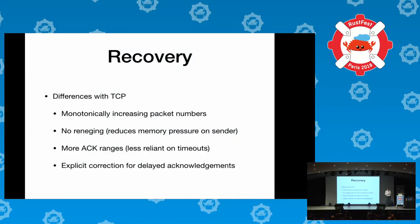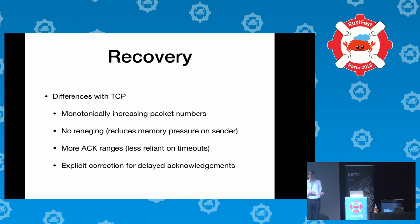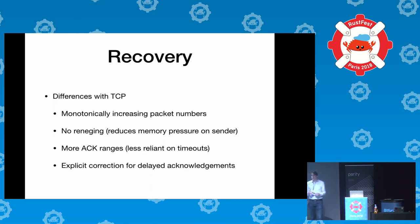A short bit about recovery. The differences with TCP are well explained in the specification. Whereas TCP conflates the order of transmission of packets and the order of delivery of packet contents to the application, these are separate concepts in QUIC. QUIC packet numbers are just representative of the transmission order, but the order in which data is delivered to the application relies on data offsets that are per stream. This again helps prevent head-of-line blocking. And because you have a very clear ordering in your packet numbers, that also makes it easier to detect packet loss.